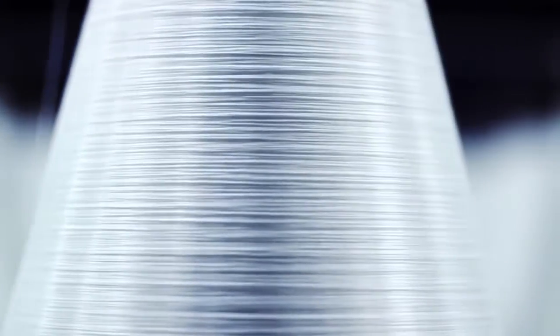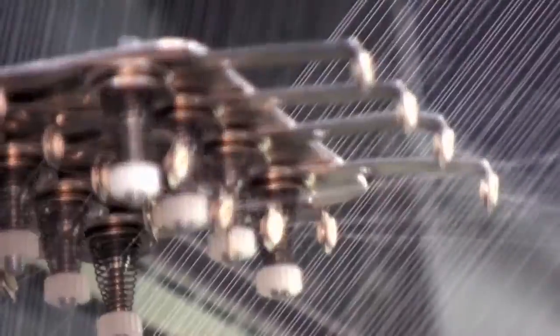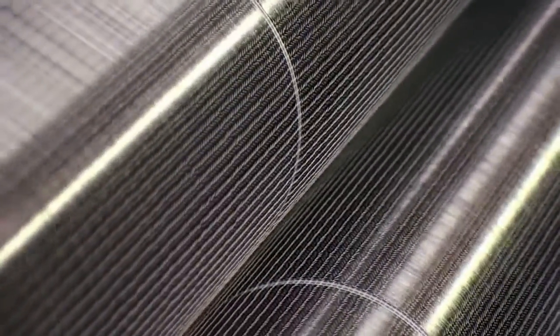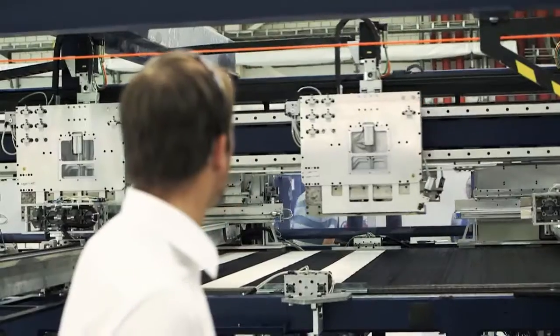What happens in Wackersdorf is actually that we turn the carbon fiber we get into textiles. We really make textile rolls that are then, in the next process, cut into the basic material for the car parts.